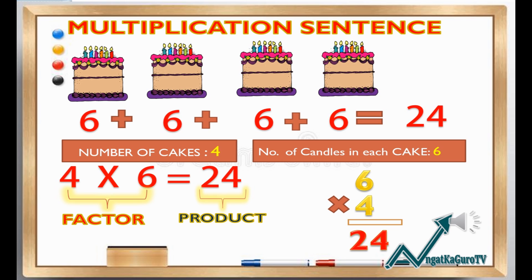Let's now proceed to the multiplication sentence. In the addition sentence, we add 6 plus 6 plus 6 plus 6 equals 24, and 24 is called the sum. In the multiplication sentence, we separate the number of cakes, which is 4, and the number of candles in each cake, which is 6. We write 4 times 6 equals 24. The factors are 4 and 6, and 24 is called the product.